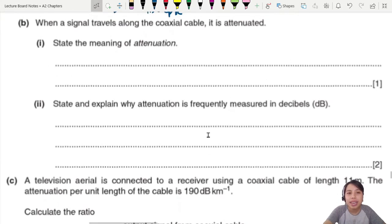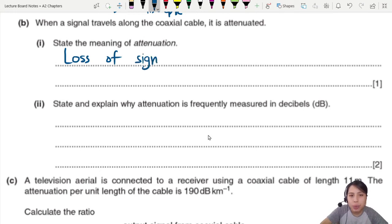Moving on. When a signal travels along the coaxial cable, it's attenuated. Pretty normal. All the things will get attenuated. What is attenuation though? Here's where you can say that this is the loss of signal power. This one we are specific to communication. So we stick to the communication. Don't talk about ultrasound or x-rays definition.